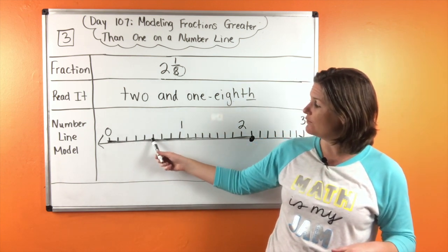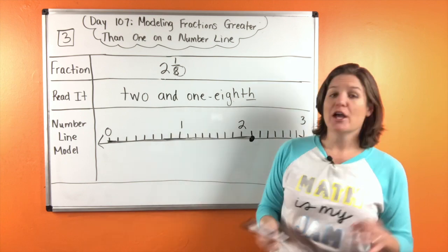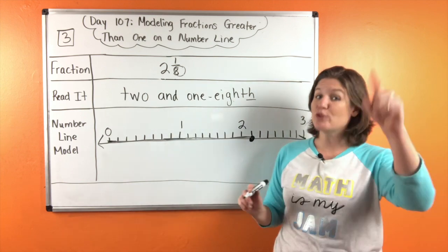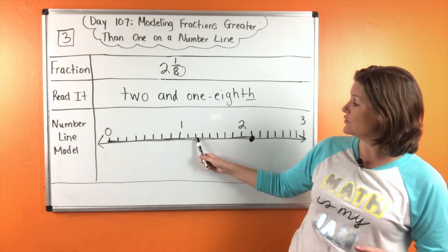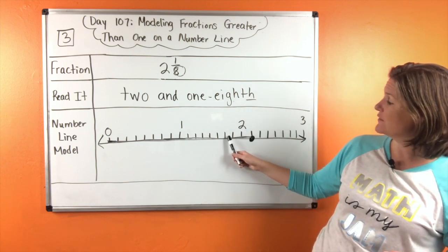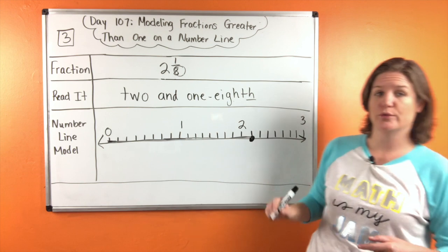Make sure that you have eight jumps. One, two, three, four, five, six, seven, eight between each hole. And make sure you don't start counting until you leave that whole number. One, two, three, four, five, six, seven, eight, two holes.